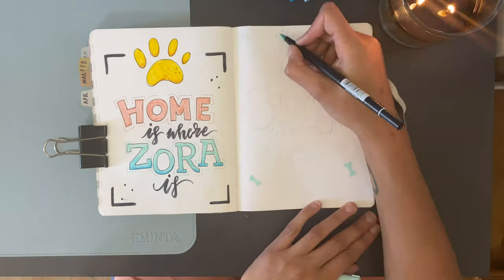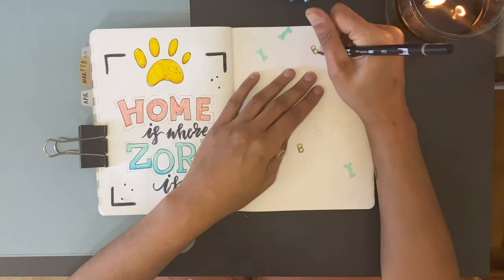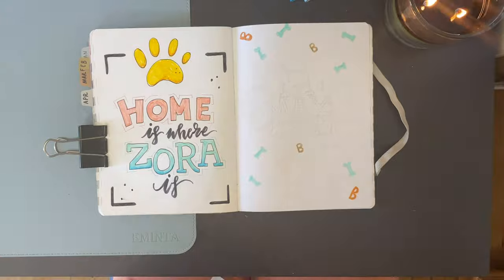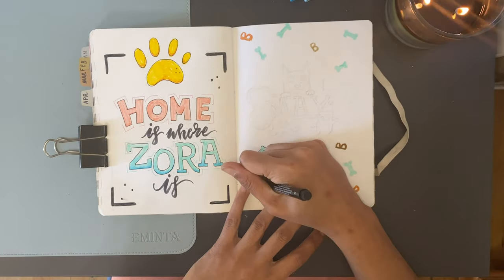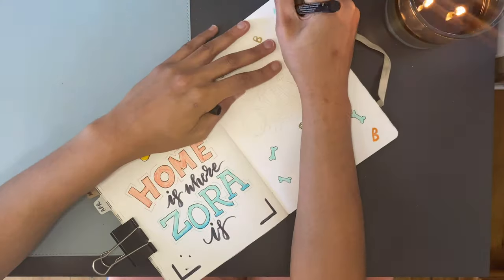For the title page, I'm drawing little doggy bones and her favorite treats. They're like peanut butter and bacon snacks and they're in the shape of a bee, so I thought it would be a cute little motif for the background and throughout the month.